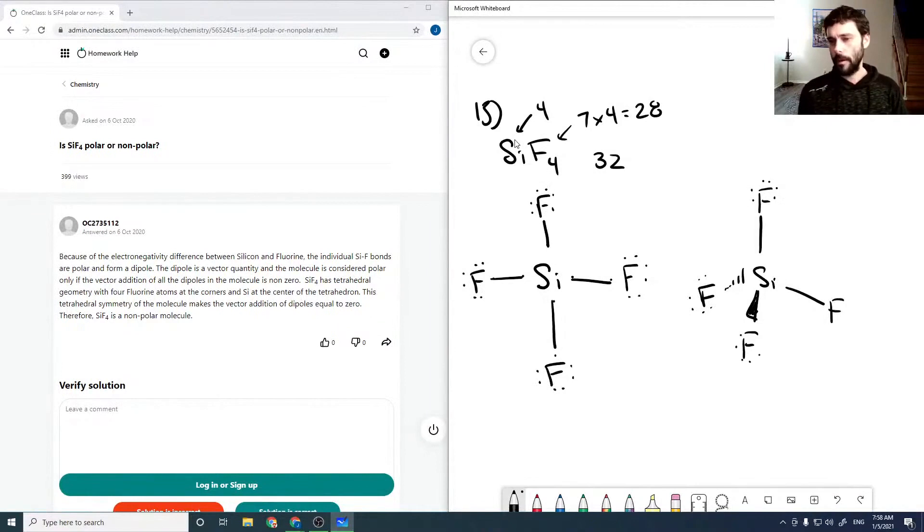meaning all the dipoles would cancel. Even though there is a dipole from fluorine to the silicon, they would all perfectly cancel. This is a symmetric molecule, so it's nonpolar.